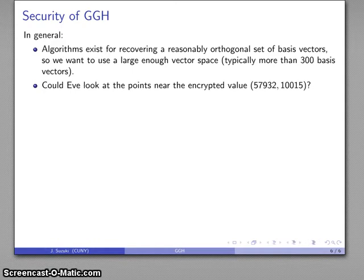Now, you might say, maybe Eve can look at all the points that are close to the encrypted value. She knows this encrypted value is close to the actual message. And she knows what the noise vectors look like. So she knows that the actually computed message vector is going to be plus or minus some amount from here.